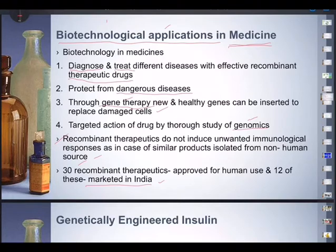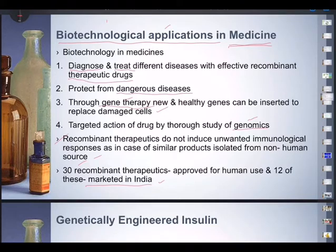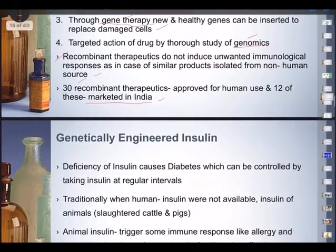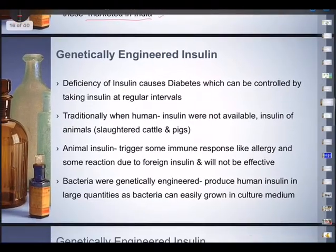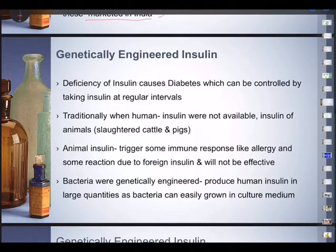The biotechnological processes enable mass production of safe and more effective therapeutic drugs. This is known as medical biotechnology, or sometimes called red biotechnology. In 1921, three scientists — Banting, Best, and MacLeod — succeeded in achieving something great: the production of genetically engineered insulin.